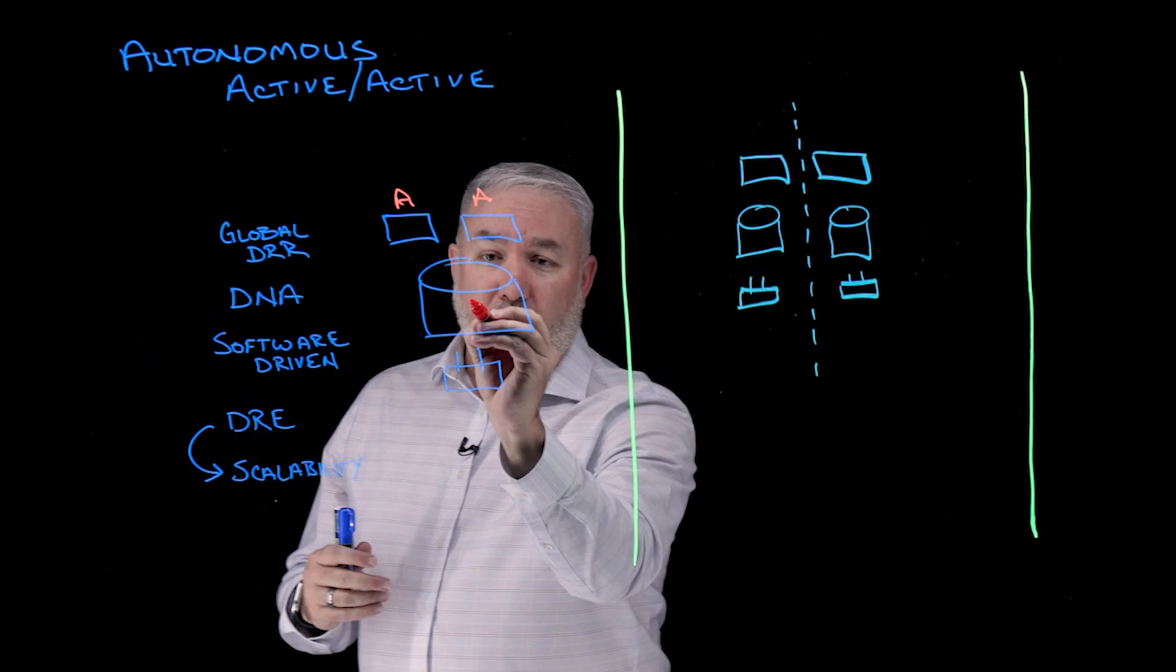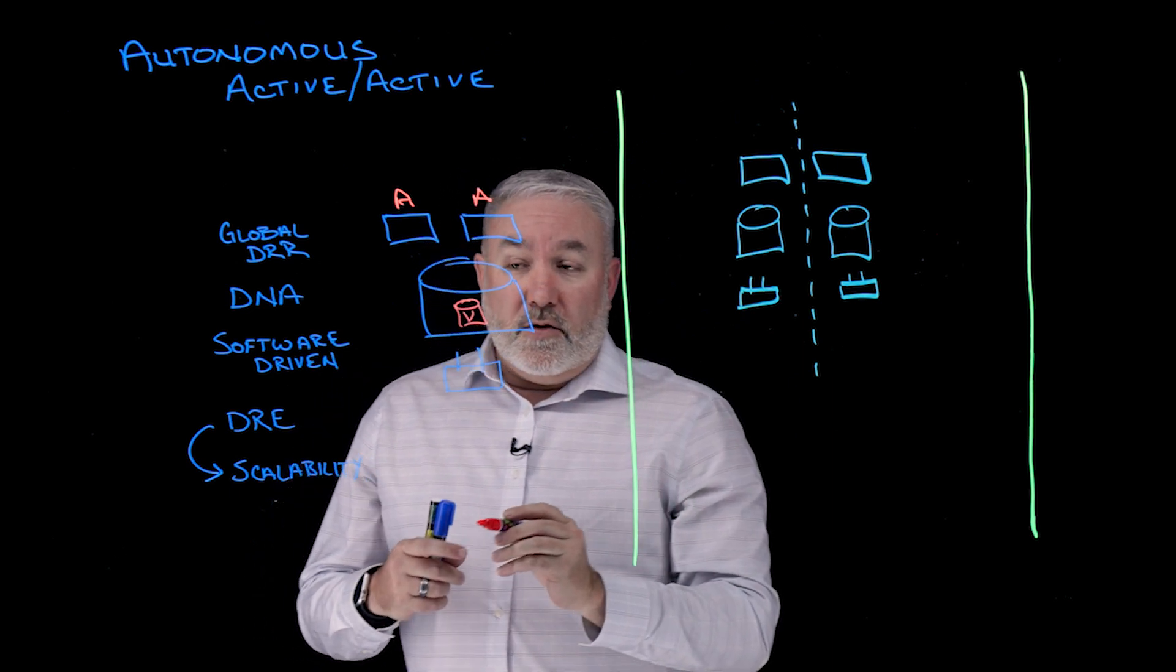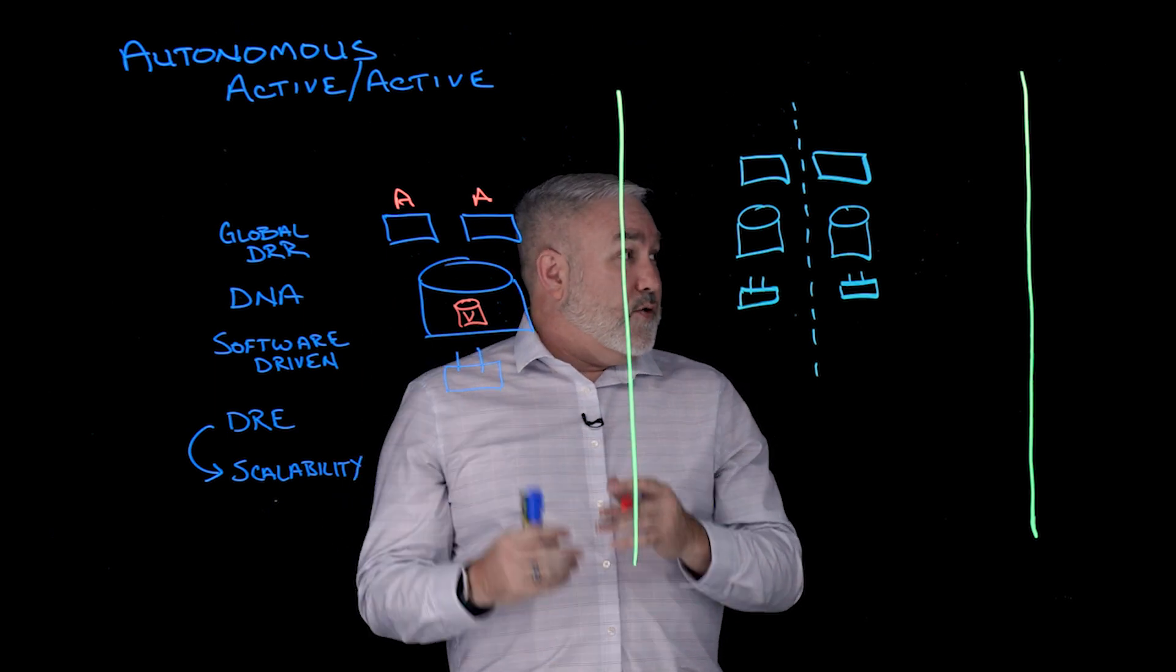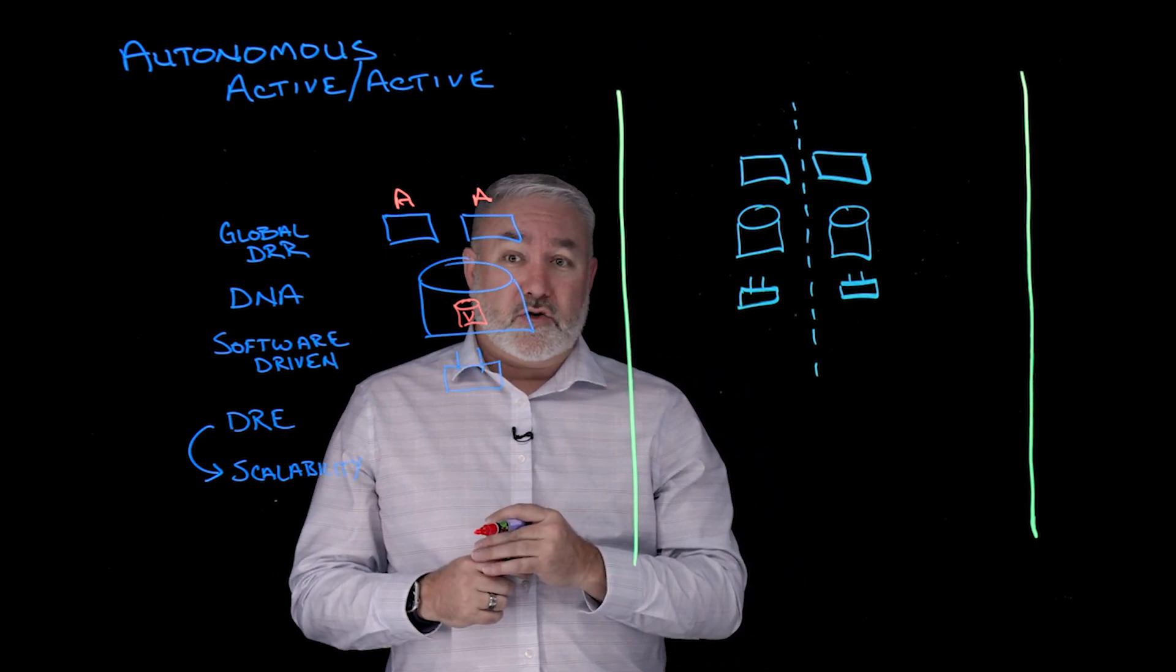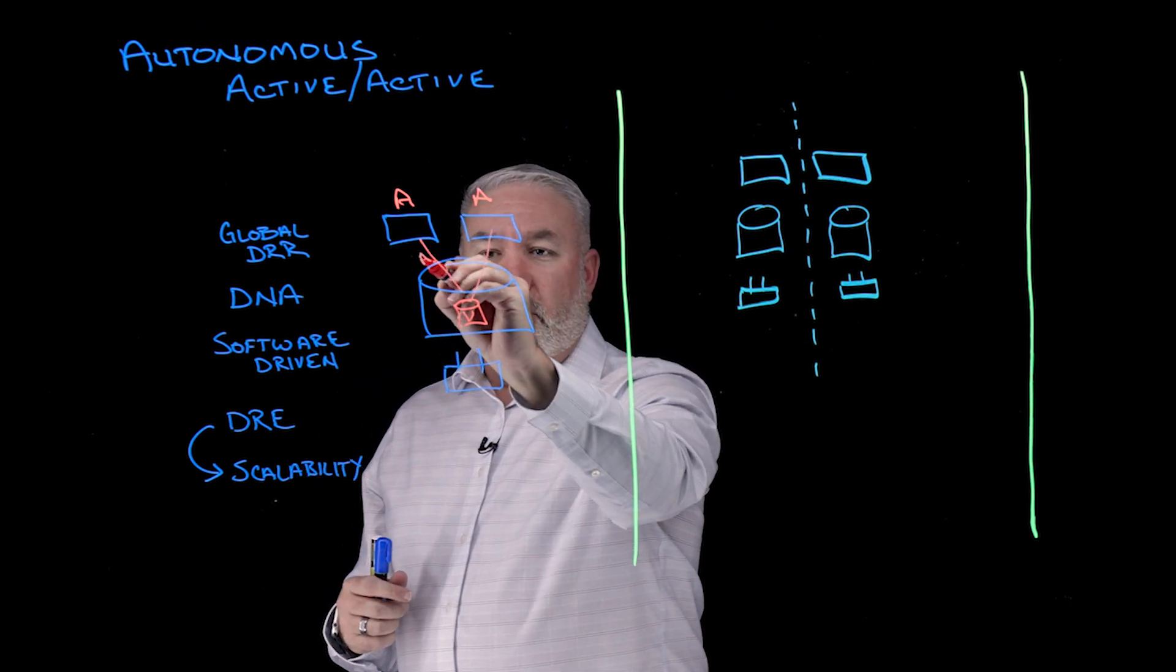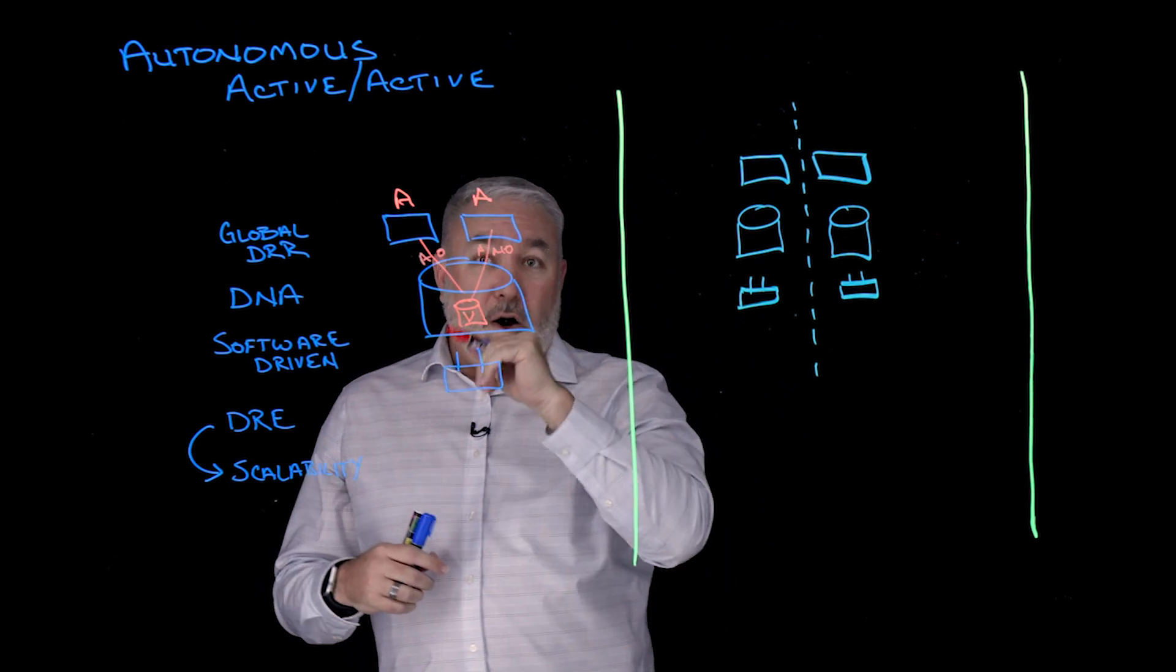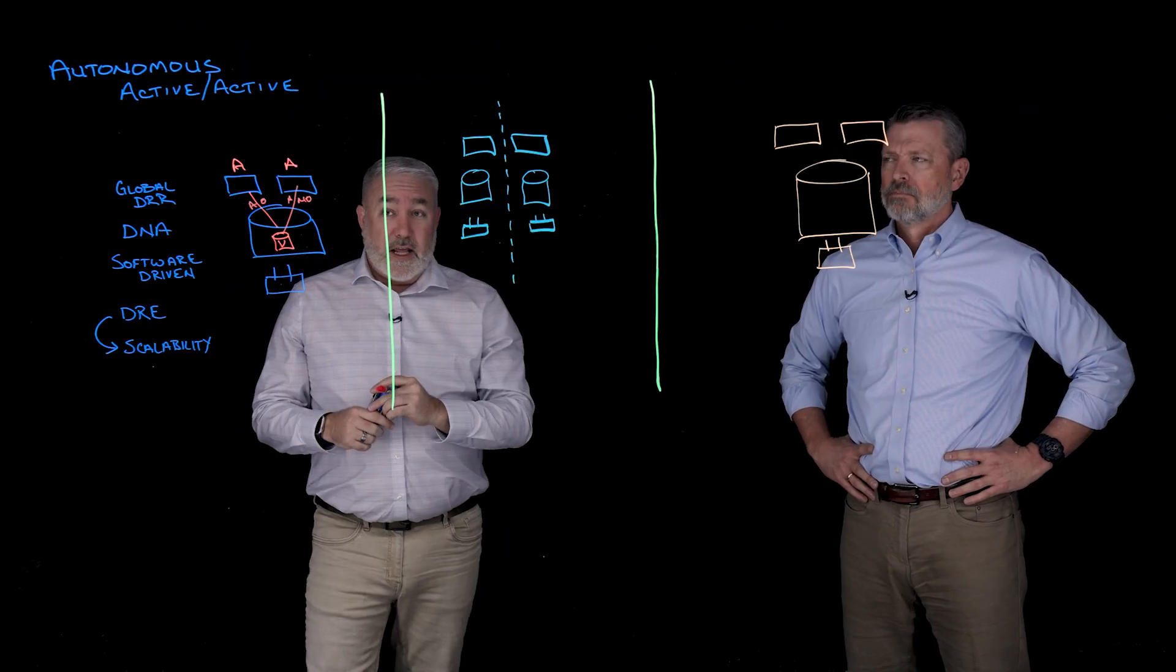And if we look at this from provisioning volumes, for example, we're creating volumes. Gone are the days of saying hey, I've got to create a volume but I'm going to pin that to a particular node or pin that to a particular controller. In the world of PowerStore, we're getting an active-active connection or an active-optimized, active-non-optimized connection. Meaning that the host is just going to see this from a multi-pathing perspective, it's going to have an active connection to both.